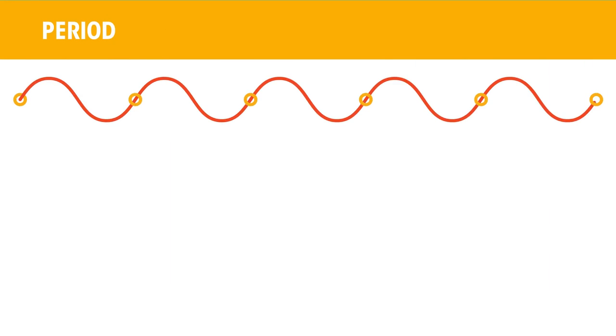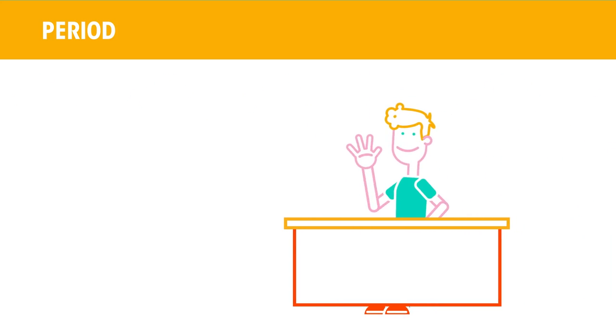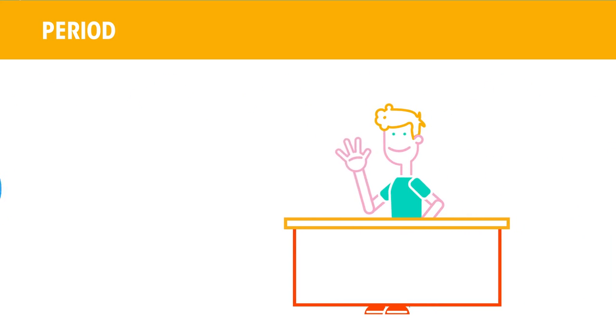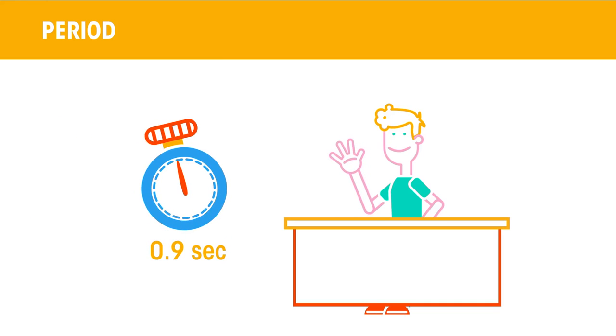The period of a wave is the time for one complete cycle, so the time taken for one person to stand up, wave and sit down. This would be measured in seconds.